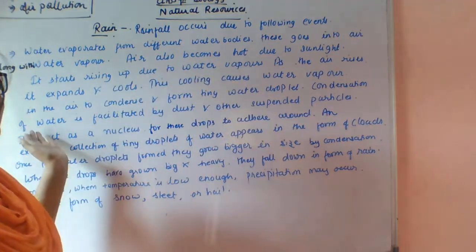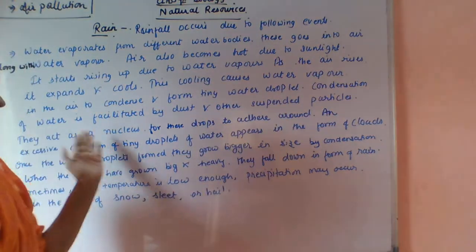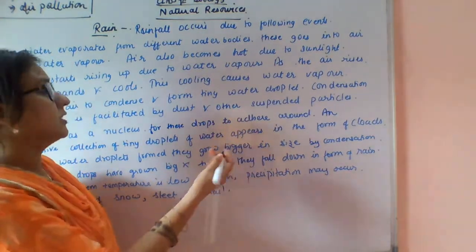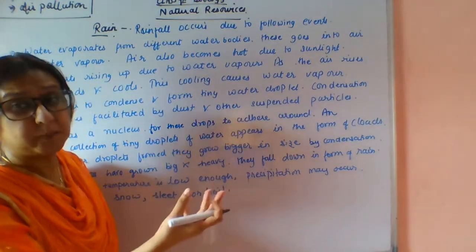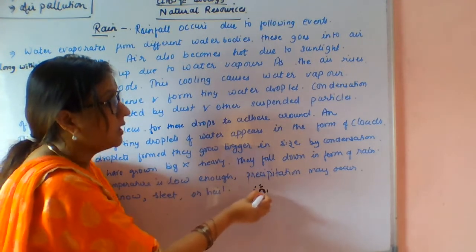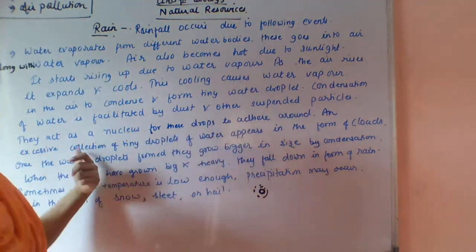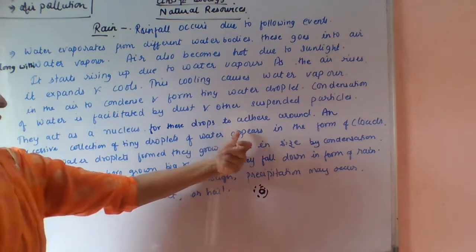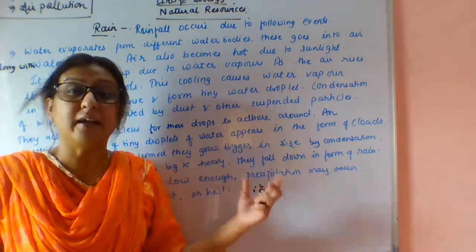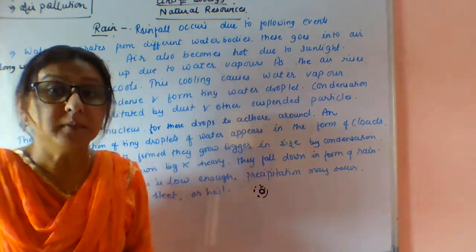The condensation of water is facilitated by dust and other suspended particles. They act as a nucleus for these drops to adhere around. Air consists of dust and other suspended particles, and during condensation these particles act as a nucleus. An excessive collection of tiny droplets of water vapor forms clouds.